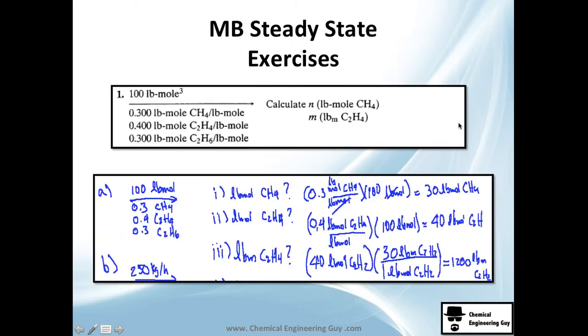Let's continue with the exercises. They tell you calculate n, which is pound moles of methane. It's very easy - just 0.3 pound mole of methane per pound of solution and we have 100 pounds of solution, so you multiply these and you will have 30 pound moles of methane, which makes sense.